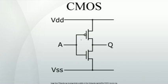CMOS accomplishes current reduction by complementing every NMOS FET with a PMOS FET and connecting both gates and both drains together. A high voltage on the gates will cause the NMOS FET to conduct and the PMOS FET to not conduct, while a low voltage on the gates causes the reverse. This arrangement greatly reduces power consumption and heat generation.